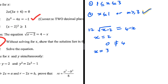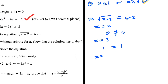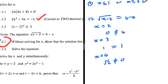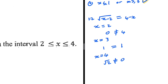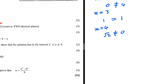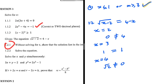Now x equals 3: square root of 3 minus 2 is square root of 1, which equals 1, and 4 minus 3 equals 1. Both sides equal 1 — x equals 3 works! Now x equals 4: square root of 4 minus 2 is square root of 2, but 4 minus 4 equals 0. Square root of 2 does not equal 0, so x equals 4 does not work. So how are we supposed to show the solution lies in that interval if only x equals 3 works exactly?